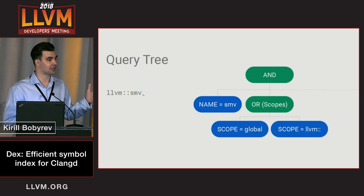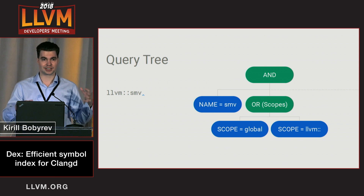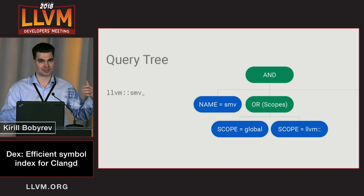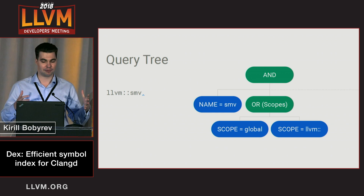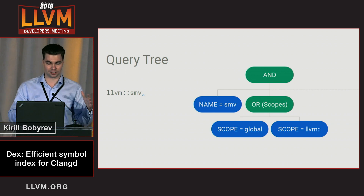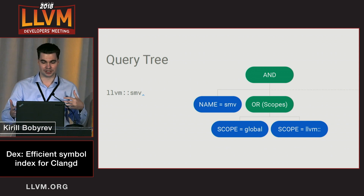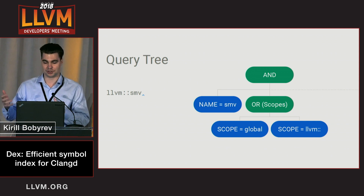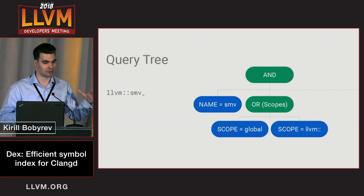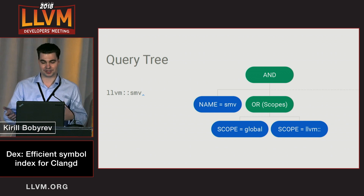To process queries for global code completion, we extract a set of attributes from the query and then try to find all symbols matching a specific set of queries expressed in the semantics of a query tree. We have logic operations on these posting lists — we can merge and intersect them to retrieve symbols which have the qualities we want. There are more sophisticated operations as well, but those are the basic ones.